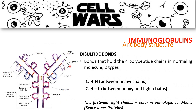Immunoglobulins bind with each other — heavy chain to heavy chain and light chain to heavy chain — through disulfide bonds that hold the four polypeptide chains together in a normal IgG. A connection between two light chains is considered abnormal. This abnormality is termed Bence-Jones proteins, and this discovery revealed that there are two types of light chains: kappa and lambda.